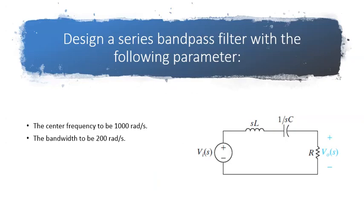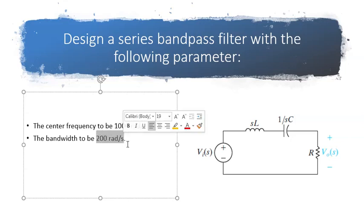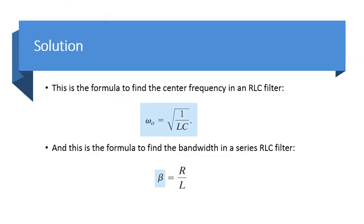If you look at the problem again, both of them are given to us. The center frequency is 1000 radian per second. The bandwidth is 200 radian per second. And we have the formula. So, let's try to use these formulas.